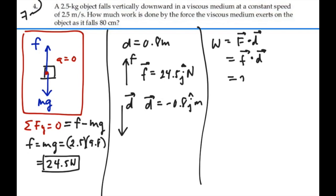So that would be 24.5j dotted with a negative 0.8j. j dot with j is going to give us 1. So this will give us a negative 0.8 times 24.5.